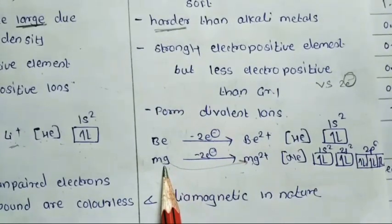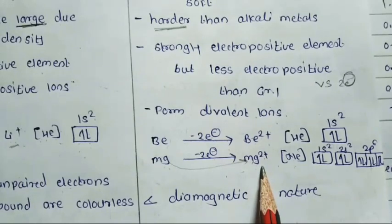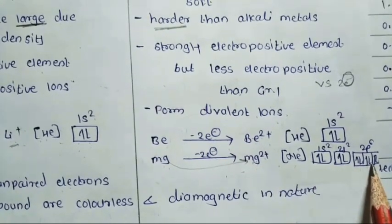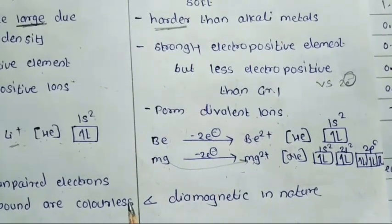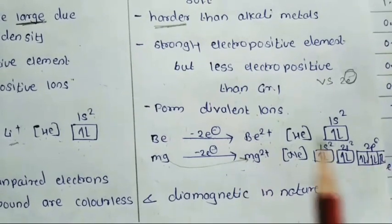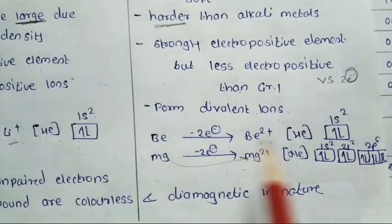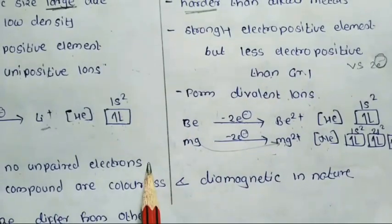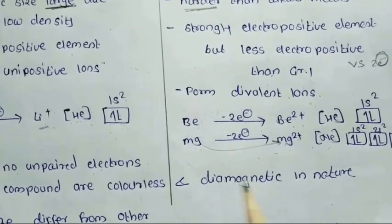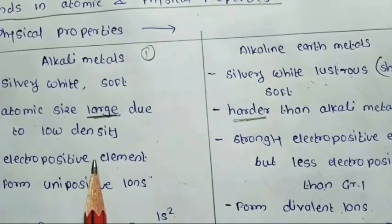For example, Mg2+ is isoelectronic with neon: 2S2 2P6 — all electrons are paired. There is an absence of unpaired electrons. Since all valence electrons are lost, the electronic configuration resembles that of noble gases, and all electrons are paired. Therefore, compounds of alkali metals and alkaline earth metals are colorless and diamagnetic in nature. Diamagnetic means all electrons are paired.